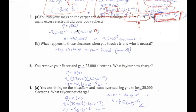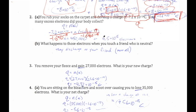Since n is multiplied by negative 1.6×10⁻¹⁹, divide both sides by negative 1.6×10⁻¹⁹ to isolate n. That gives negative 7.2×10⁻¹⁴ divided by negative 1.6×10⁻¹⁹, which equals 450,000 electrons — or equivalently 4.5×10⁵ electrons. Either form is acceptable.